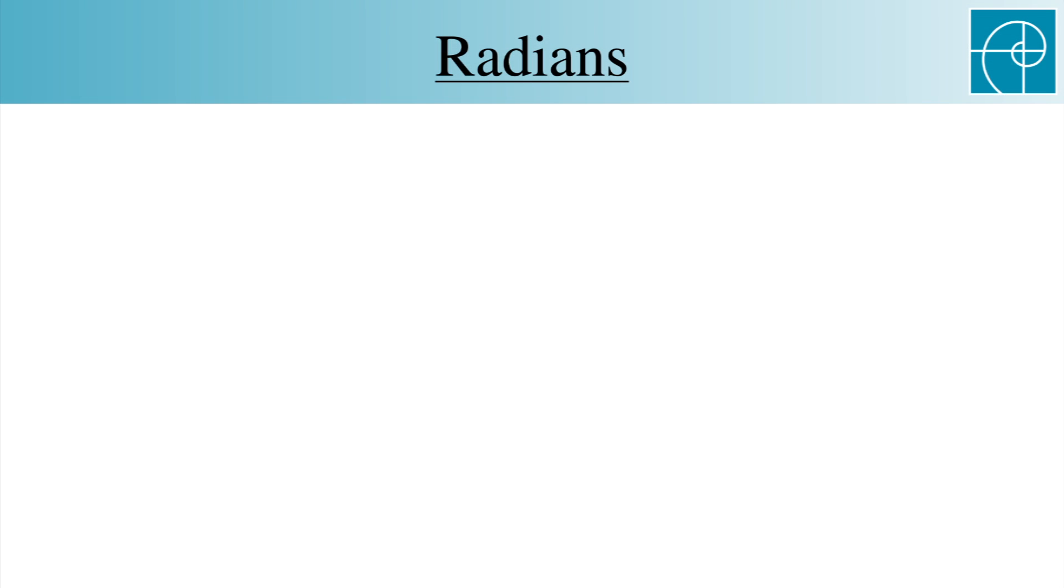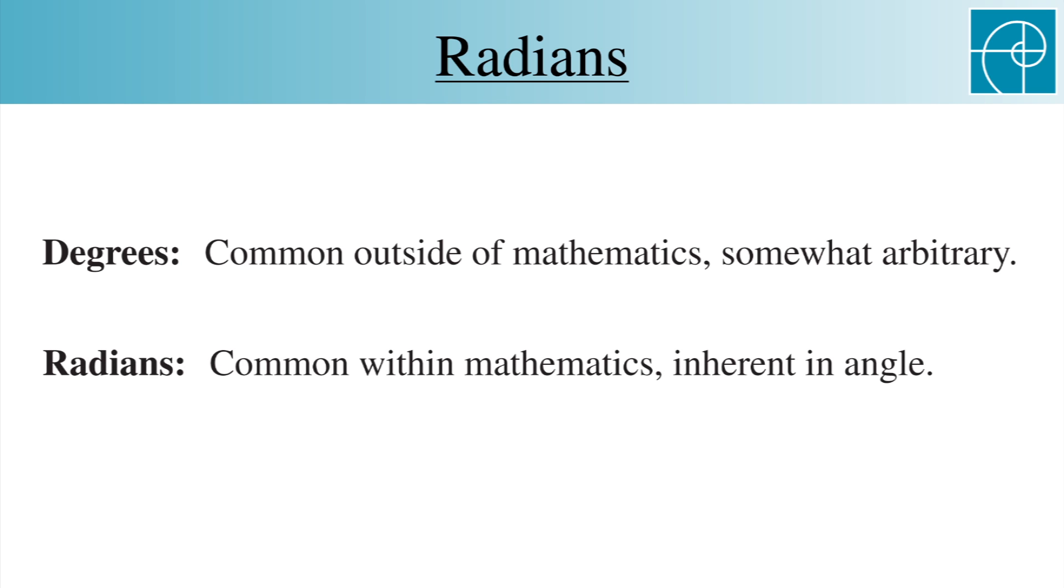It's time to learn about radians. These are what mathematicians usually use to measure angles. Outside of math, degrees are generally used, but these are somewhat arbitrary in that they don't arise from a natural property of an angle. We want to define radians to be a measure of angles that comes from something inherent in the angles themselves.